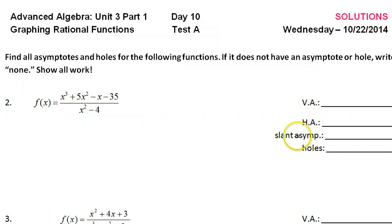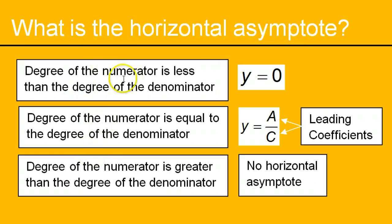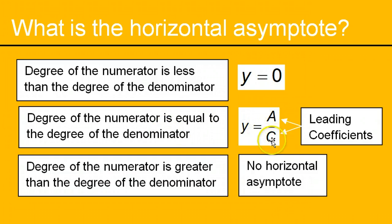Let's start with the question of horizontal asymptote or slant asymptote. The horizontal asymptote depends on the degree. If the numerator degree is less than the denominator, then it's y equals zero for the asymptote. If the degrees are equal in the numerator and denominator, then the asymptote is y equals a over c, where a and c are the leading coefficients of the numerator and the denominator. If the degree of the numerator is greater than the denominator, then there is no horizontal asymptote, and that's when we wonder about slant asymptotes.